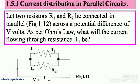Note down figure 1.12. Let two resistors R1 and R2 be connected in parallel, as shown, across a potential difference of V volts. As per Ohm's law, what will the current flowing through resistance R1 be?